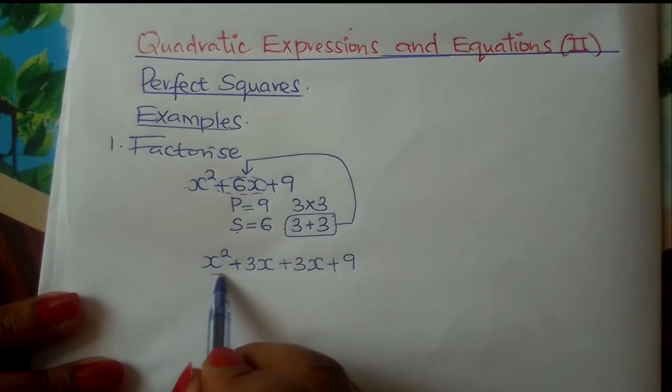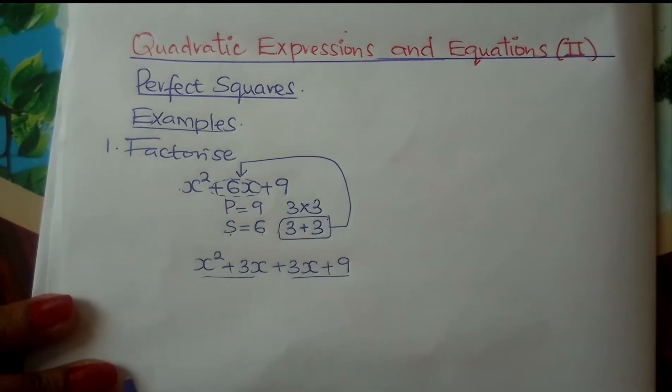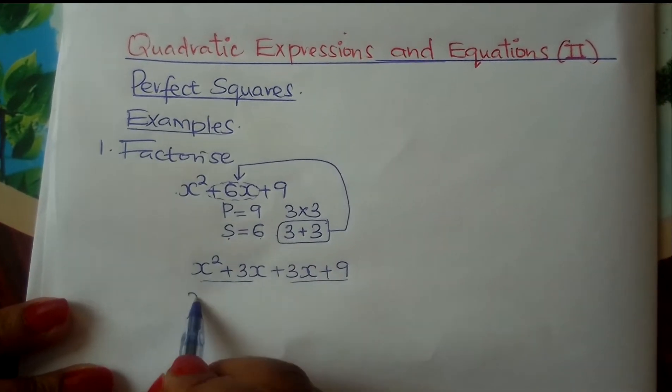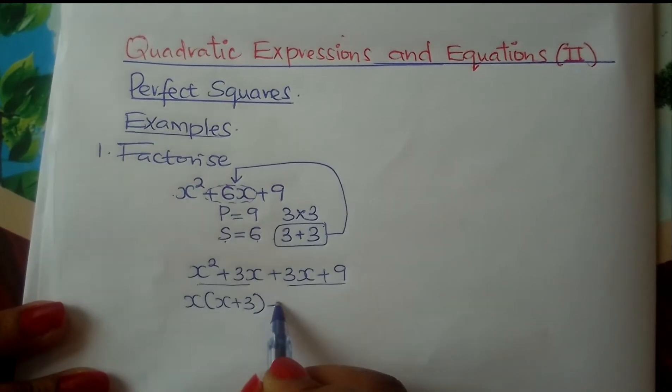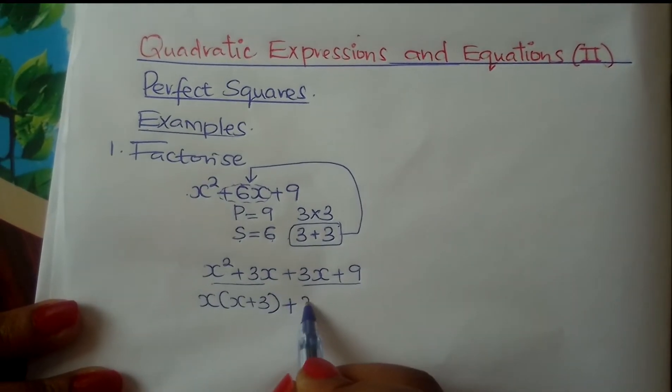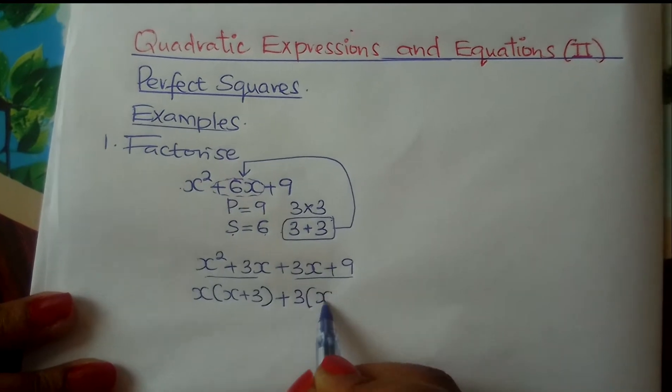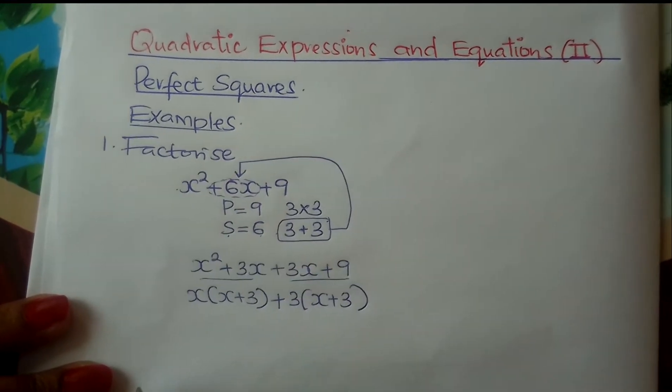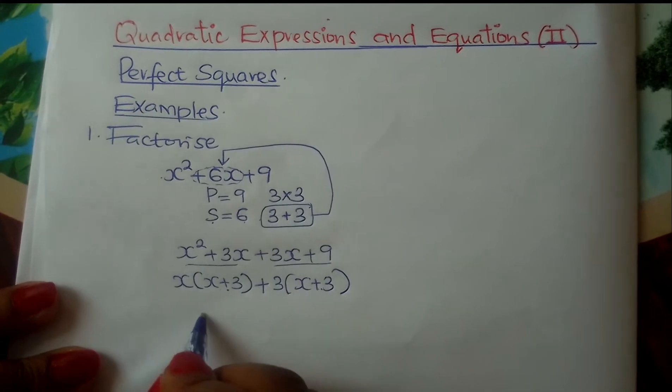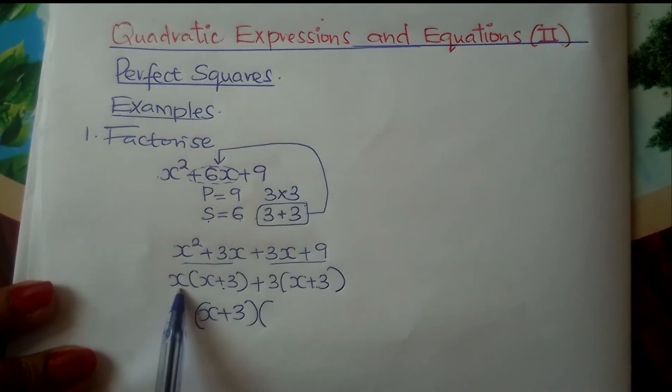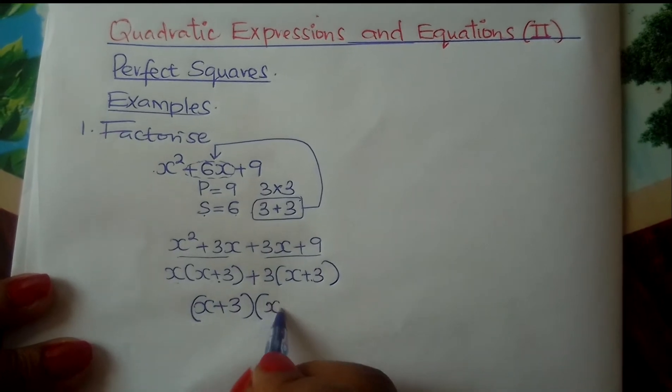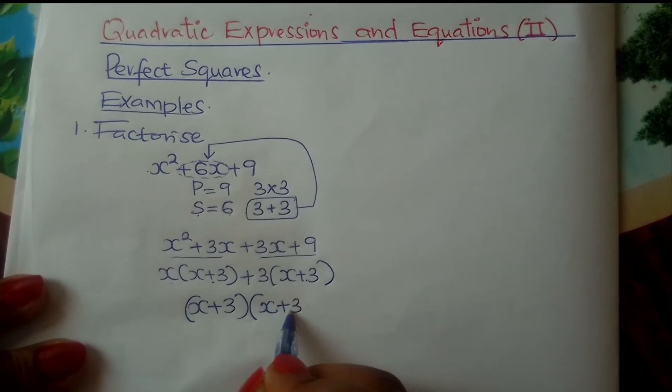Factorize this. Divide the expression into two parts. Factorize the first part. You write x(x + 3). Factorize the second part. You factor out 3, you are left with x + 3. This bracket is common. Factor it out. Then you will be left with x here and here you will be left with 3.